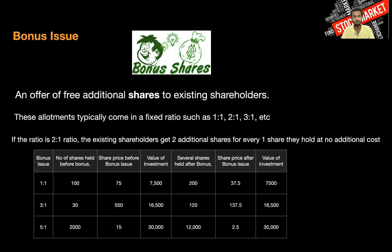Next is bonus issues. The company offers additional shares to shareholders in basic ratios like 1:1, 2:1, 3:1, etc. Suppose if you take a 2:1 ratio, you get two additional shares for every one share you are holding. Here is a table where you can see bonus issues. Suppose if you take a 1:1 ratio, initially you have 100 shares and the share price is around 75 rupees, so your investment value is 7,500 rupees.